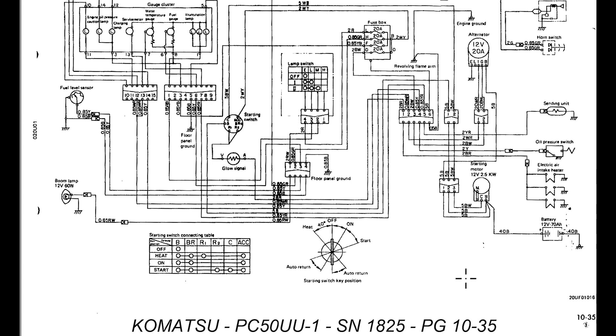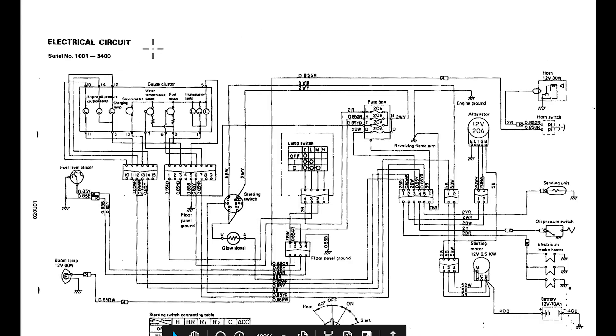Over to the right of that, you'll see where it says 10-35. That'll be a page number in a service manual. If we go to the top of the page here, which shows that this is an electrical circuit, and then it says serial number 100123400, which those would be serial numbers of machines that this particular diagram describes.